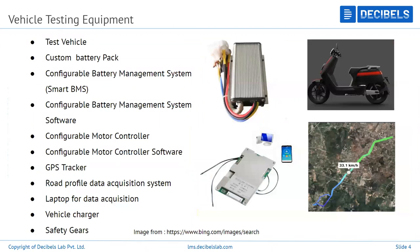Now let's look at how real-world testing is done and what major testing equipment is required for electric vehicles. First, you need a test vehicle — whichever prototype or final product you have. Then you need a custom battery pack. Why custom? Because you can't use a standard battery pack when everything is still in the optimization process — you need to determine whether 4 kWh is enough or if you should go higher. Another reason for a custom battery pack is to configure it with a smart BMS.